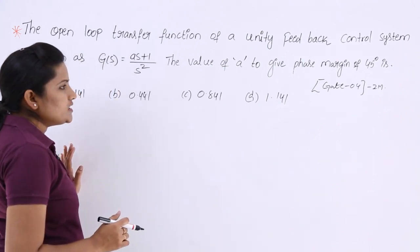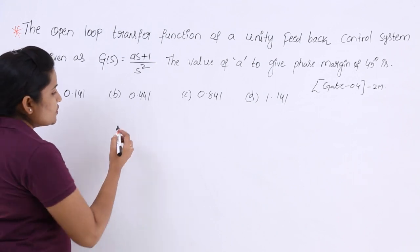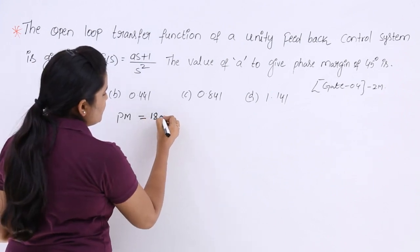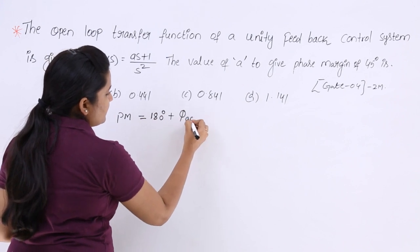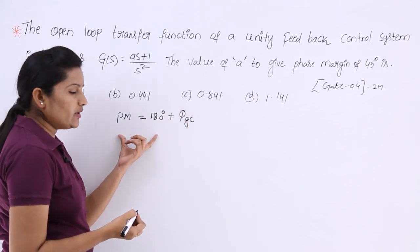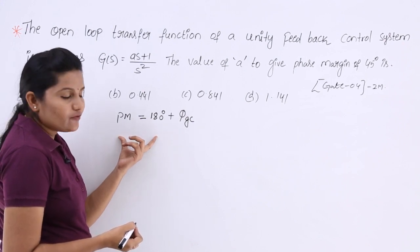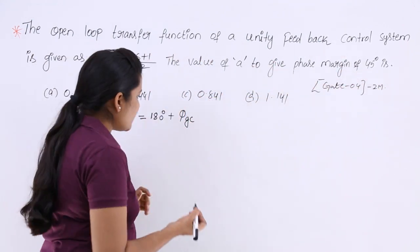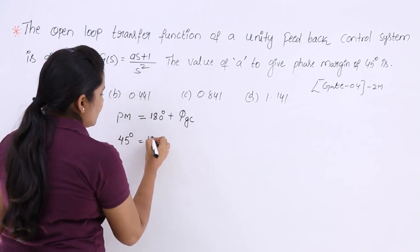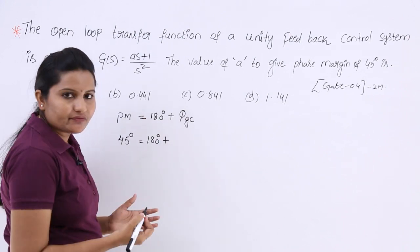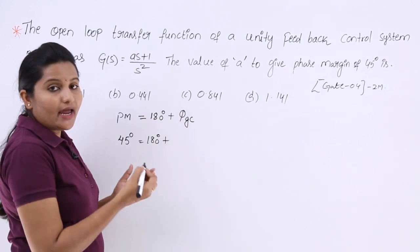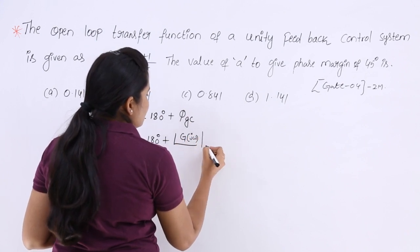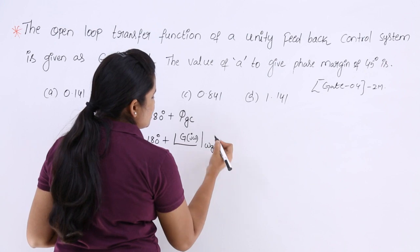We can solve this problem using the phase margin formula. The phase margin is equivalent to 180 degrees plus the phase at the gain crossover frequency. We need a phase margin of 45 degrees, so: 45 = 180 + phase of G(jω) at ωGC.